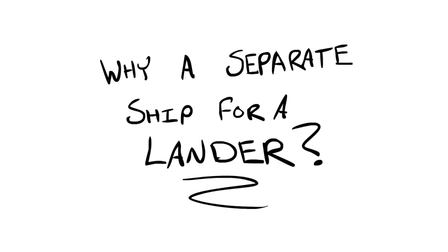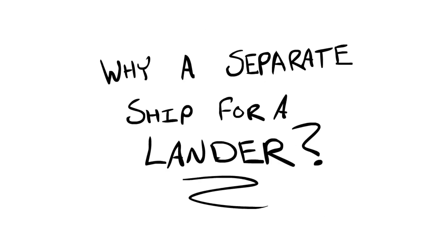The big question is, why would we have two separate ships—one for a transfer and one for a lander? It all comes down to weight. By looking at our Hohmann transfer values, we can see that we need about 14,000 meters per second delta-v to get to Moho and back to Kerbin.